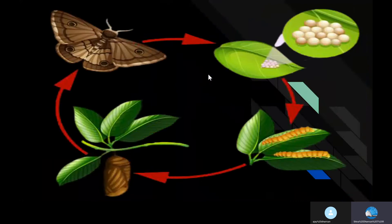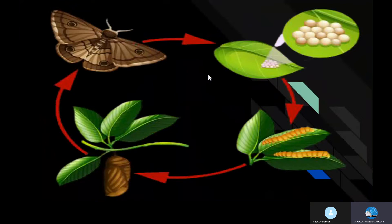Let us have a quick recap of the life cycle. The female silk moth lays eggs on a leaf. These eggs hatch out at a suitable temperature and a caterpillar comes out. The caterpillar eats leaves and becomes bigger. When it is capable of entering the next stage - pupa - it spins the cocoon and stops eating. After a few weeks, the adult moth develops inside and hatches out of the cocoon.